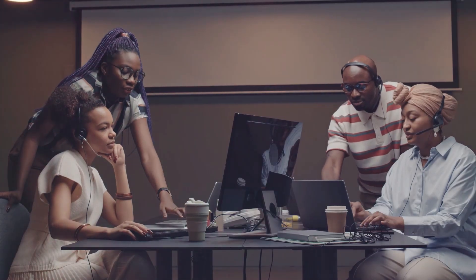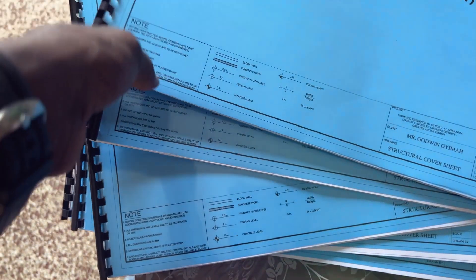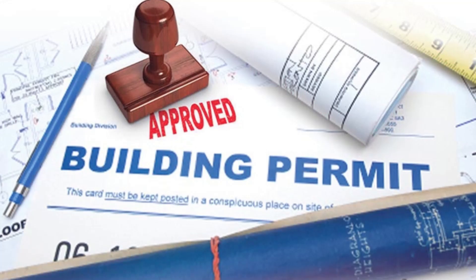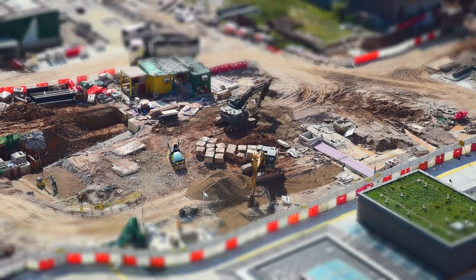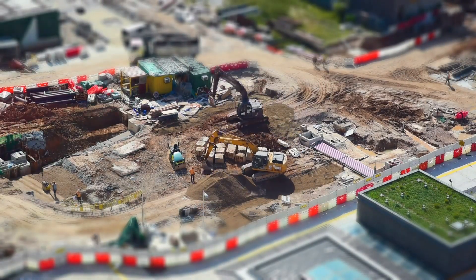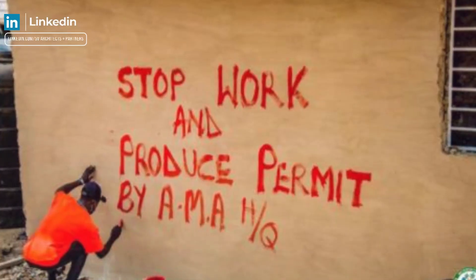Afterwards, the design team compiles all these designs and delivers them to you in a documented format — either soft copy or hard copy. These drawings are not only used for construction but also to secure a building permit. In Ghana, and I believe in most parts of the world, before you officially start construction you need to secure a building permit, and these permits are secured using the drawings the design team produced.